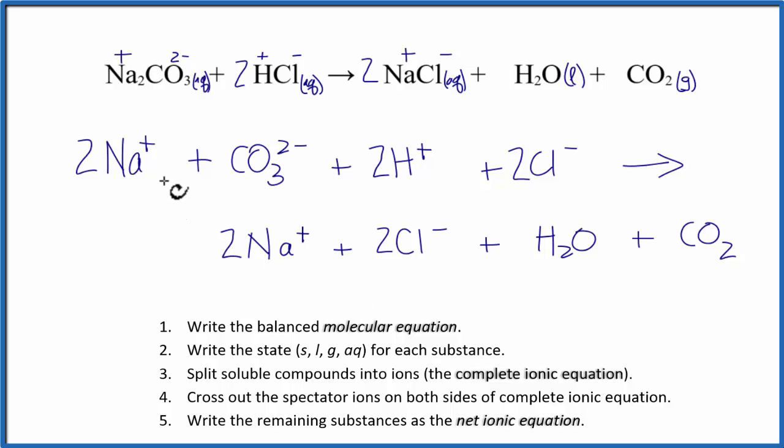Let's cross things out and get our net ionic equation. We have 2 Na here and on the product side 2 Na. Cross those out. Carbonate, I don't see it. H+, 2 Cl, 2 Cl, we can cross that out. And that's all we can cross out. With this, we can write the net ionic equation.